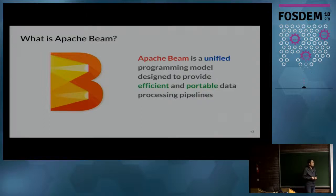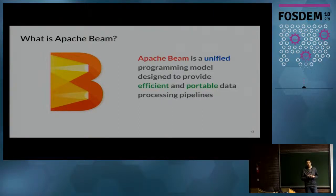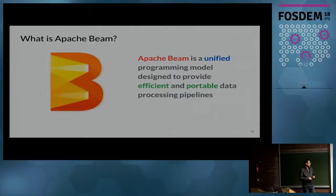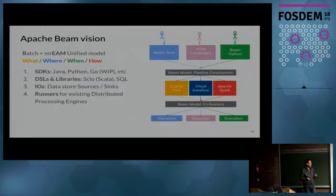So what is Beam? Beam is a unified programming model — a unified SDK or API — with the idea of having one single way to express both batch and streaming programs, with the advantage of portability. We can execute this in different systems, not only Google Dataflow, but also Spark or Flink.